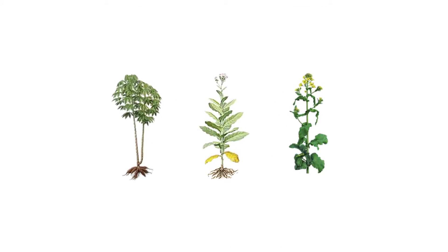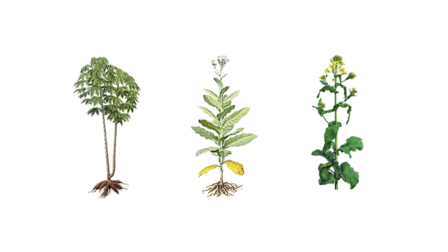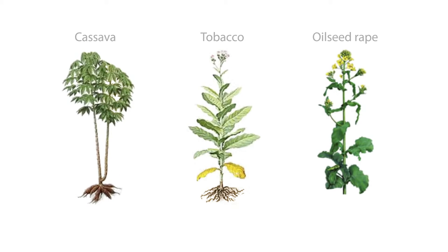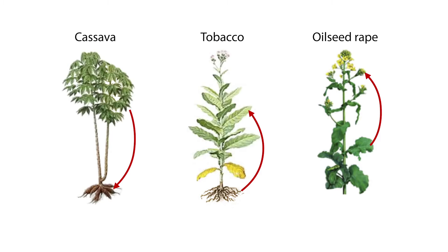Plants have developed different strategies for moving and shaping the distribution pattern of their defense compounds. In cassava, the tubers receive their defense compounds from leaves. In tobacco, all nicotine that ends up in leaves is synthesized in the roots. In oilseed rape, the high level of glucosinolate defense compounds in seeds is synthesized elsewhere and imported to the seeds.